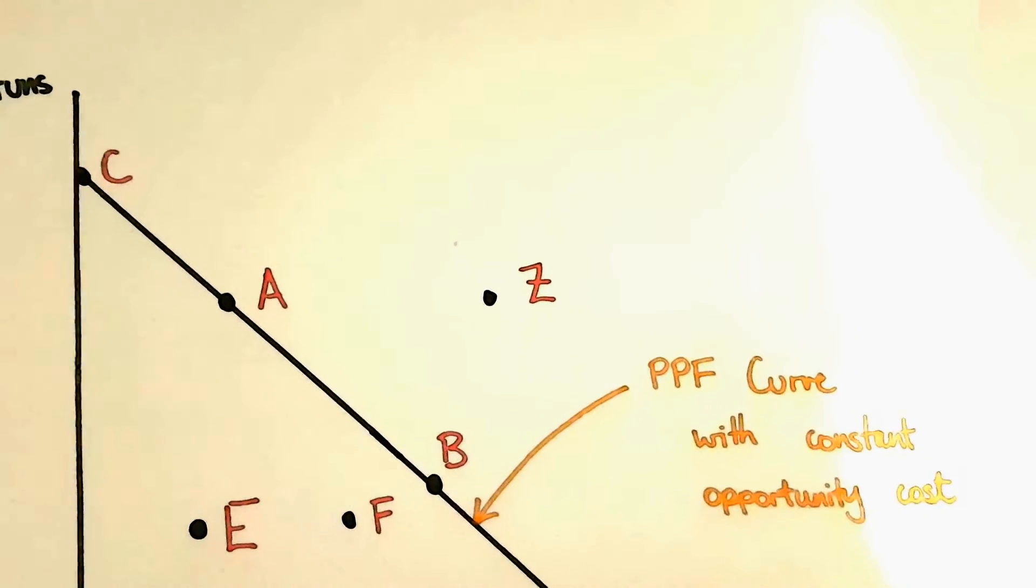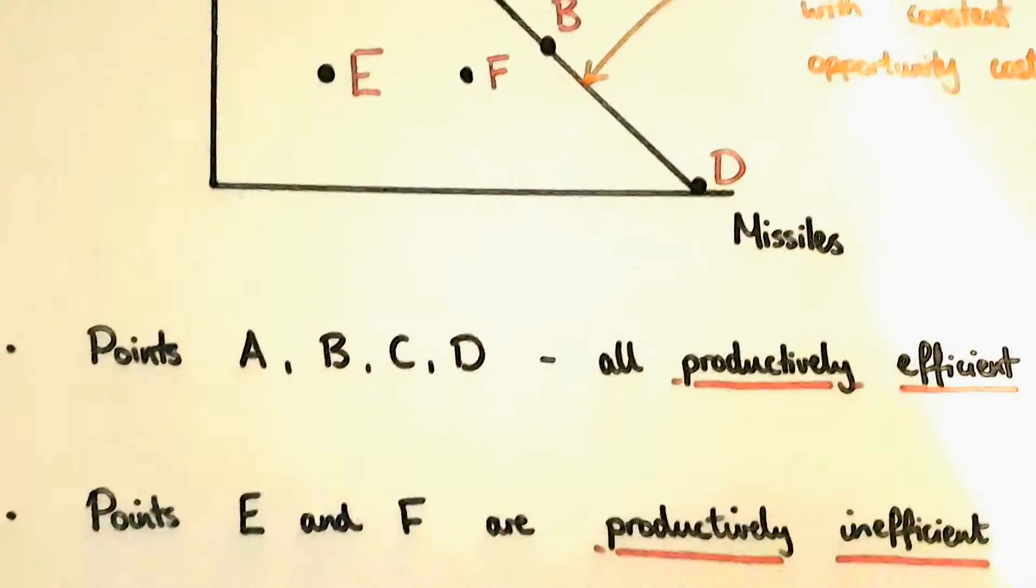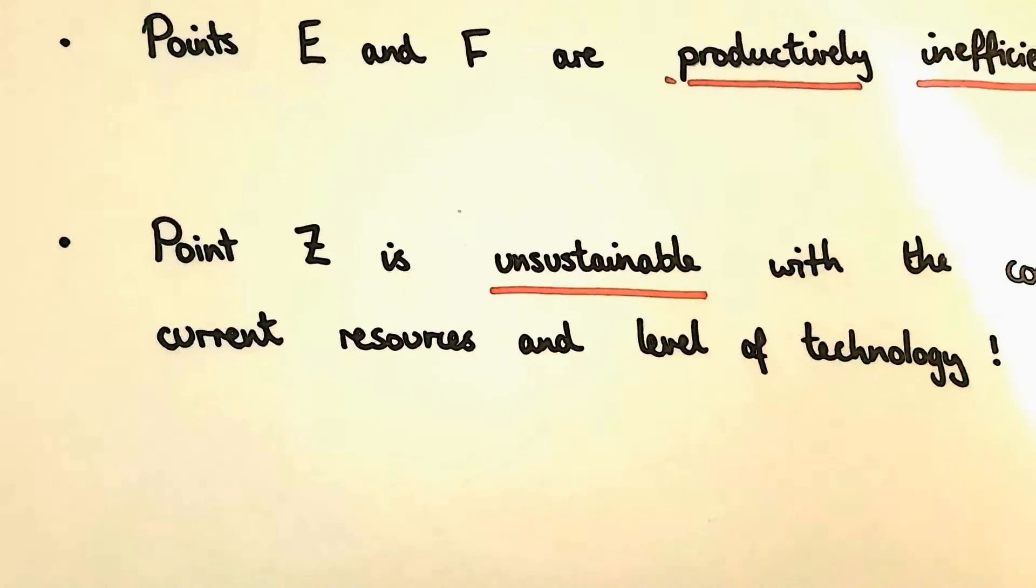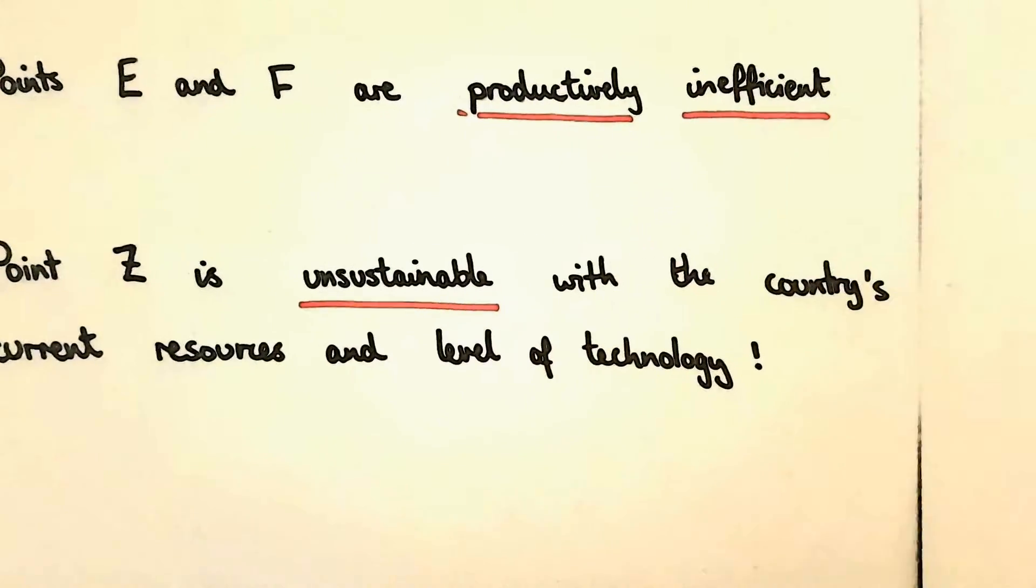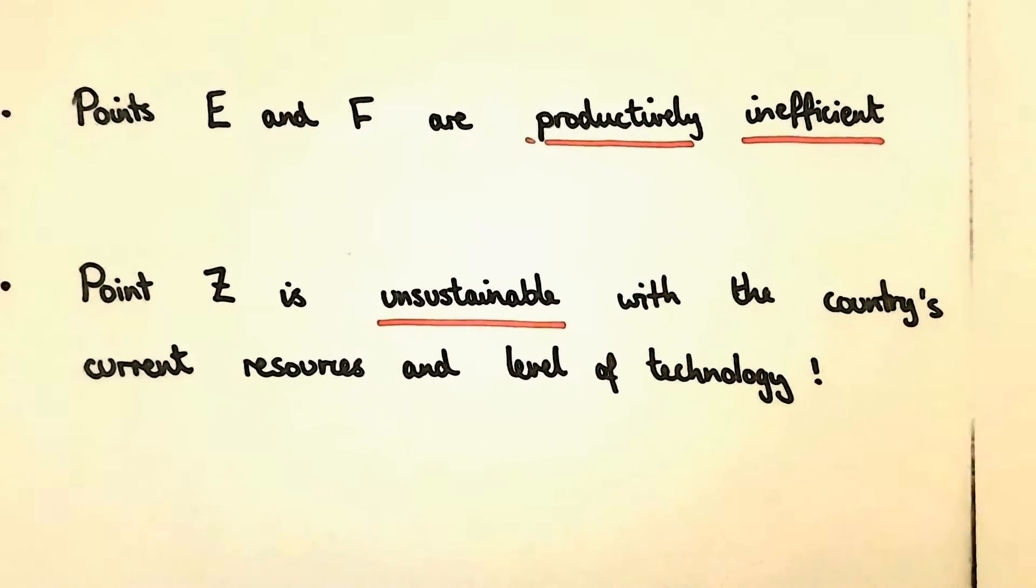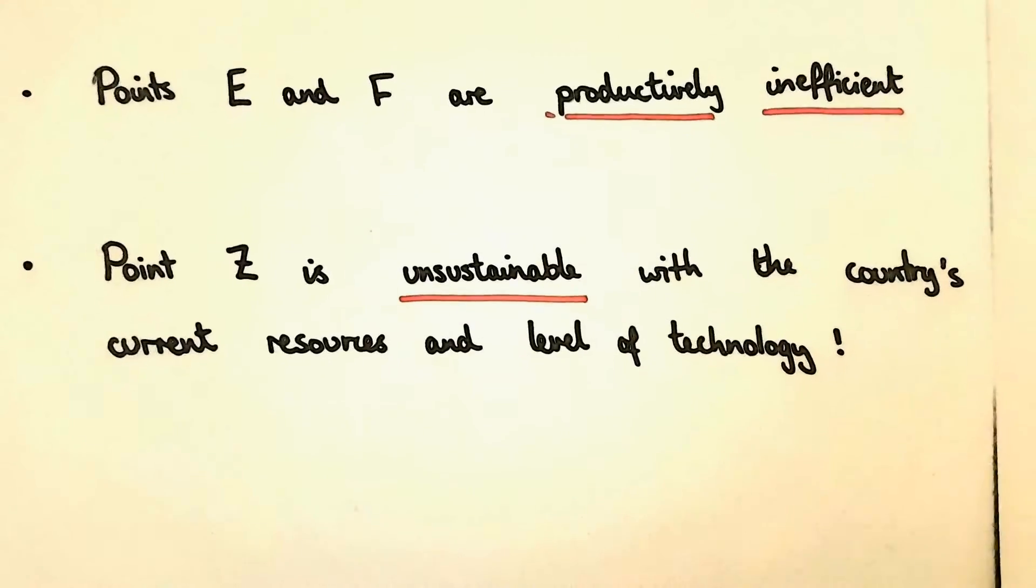Finally point Z is beyond the curve. This level of production is unsustainable given the current quantity of resources and the current level of technology in the economy.